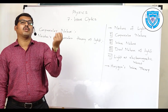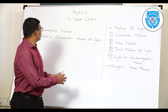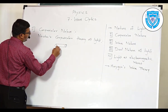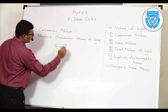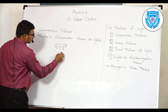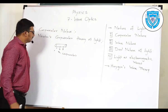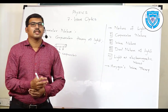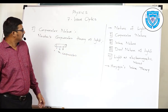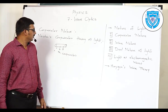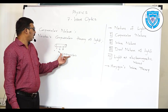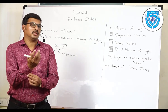Particles coming out from any type of light source are called corpuscles. If we consider any light source, it emits particles — the light source emits light in the form of particles called corpuscles. These corpuscles have certain properties: first, they are massless, so no gravitational force acts on them. They are also hard or rigid, very light in weight, travel with very high speed, and are elastic in nature.